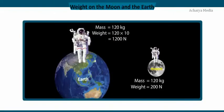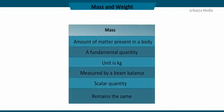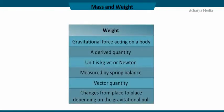Weight of an object depends on gravity while body mass is always the same anywhere in the universe. Mass is the amount of matter present in a body; it is a fundamental, scalar quantity with unit kilogram, measured using a beam balance, and remains the same anywhere in the universe. Weight is the gravitational force acting on a body; it is a derived, vector quantity with unit kilogram-weight or Newton, measured using a spring balance, and changes from place to place depending on the gravitational pull of the earth.